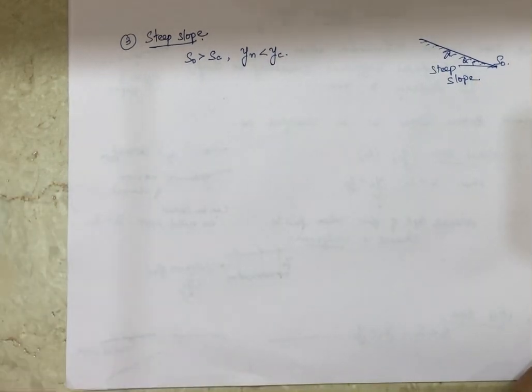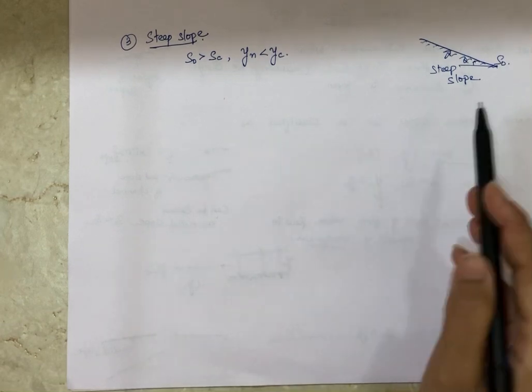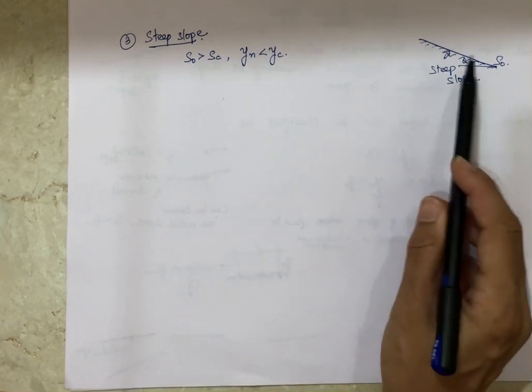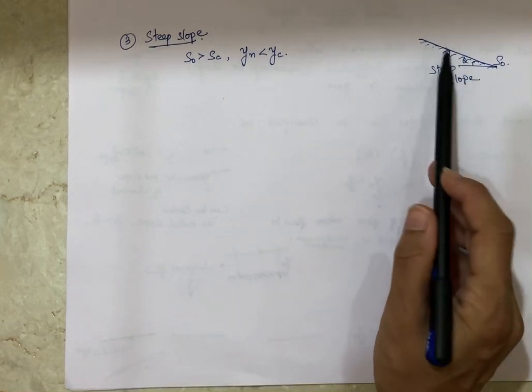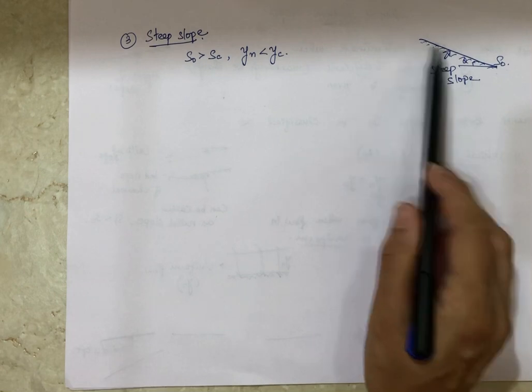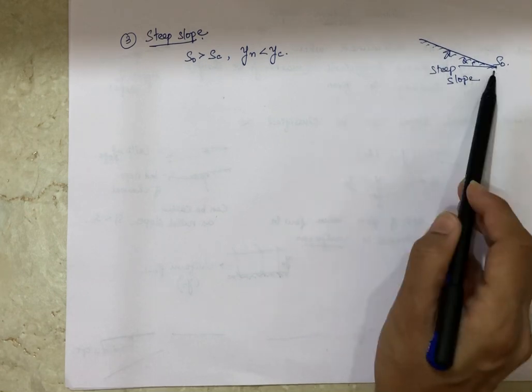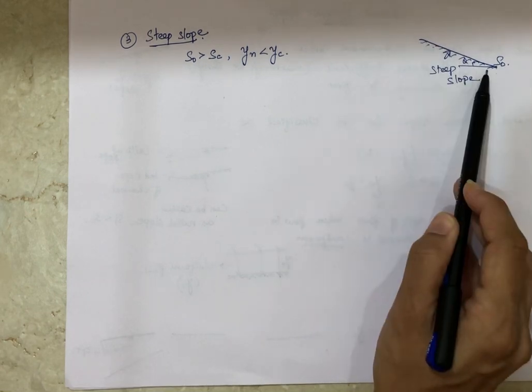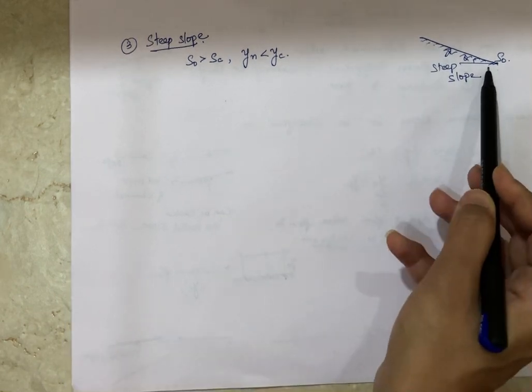So when we call a channel bottom slope steep, the bed slope is greater than critical slope and the normal depth is less than critical depth. Always remember that normal depth is the depth of flow at uniform flow conditions.